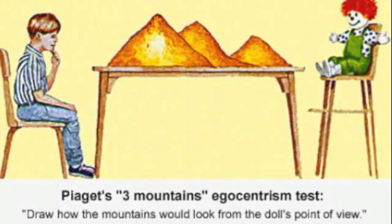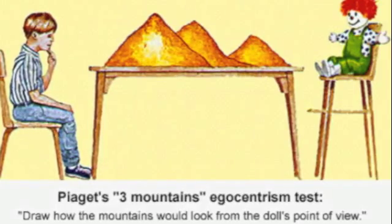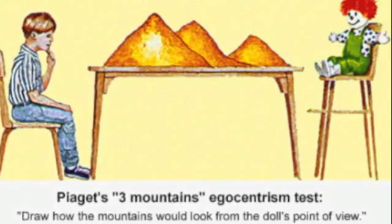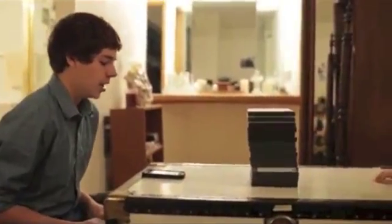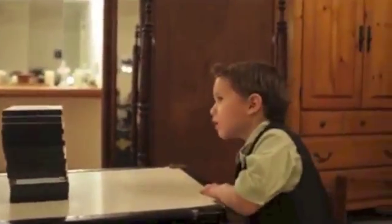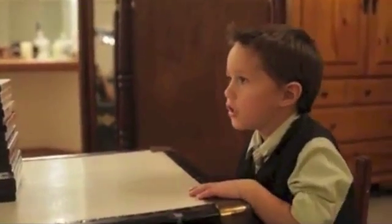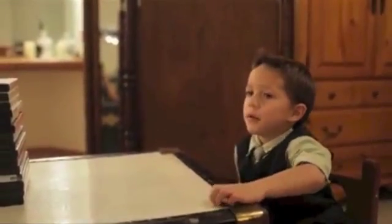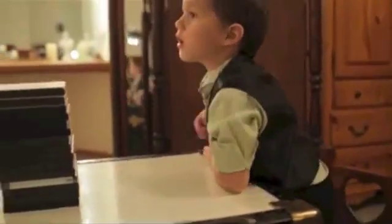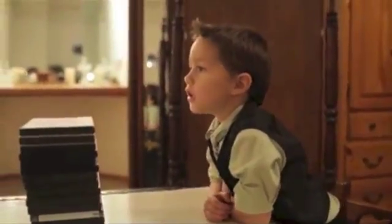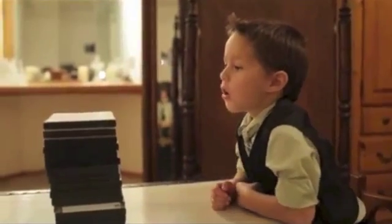Also during this stage, there are difficulties seeing things from another's point of view. Do you have a sibling — a brother or a sister? Yeah, I got a sister. What's her name? Aletha. Does Aletha have a brother or sister? No.